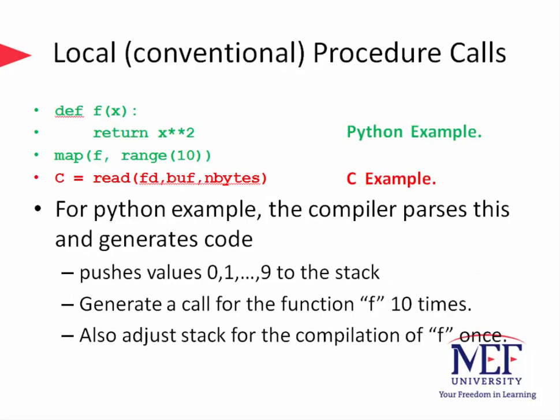Let us start with conventional local procedure calls. I'm given two different examples using Python and C programming languages. To make the call, the caller in a local procedure call must first push the parameters of the function onto the stack in some order — for instance, in C the last one becomes first in the stack. After the local procedure call, such as read, the return value is placed in a register and control is transferred back to the caller. Finally, the caller removes the parameters from the stack.